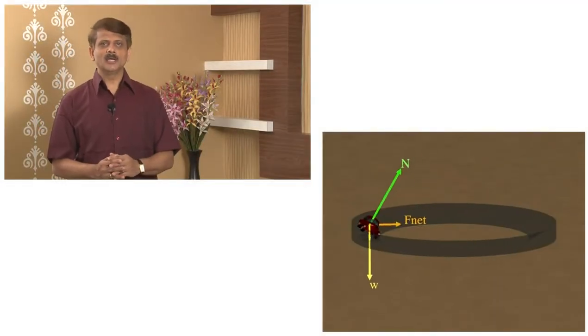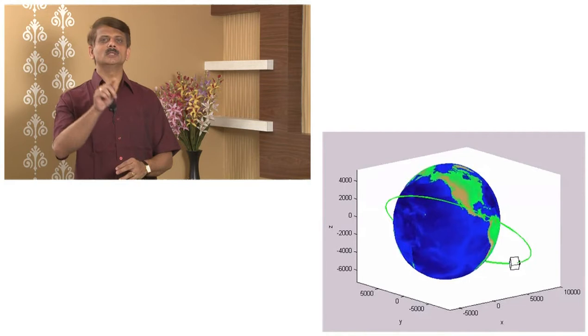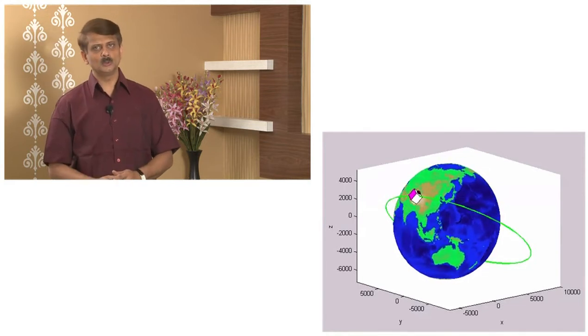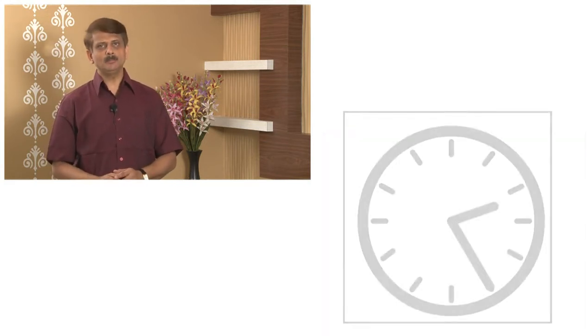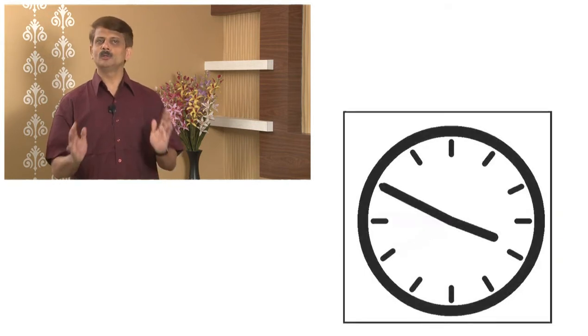For example, a vehicle moving along a curved road performs circular motion. A satellite revolving around the Earth performs circular motion, or the tip of a minute hand performs circular motion.